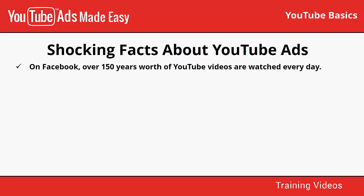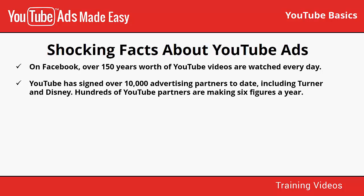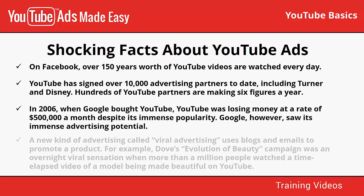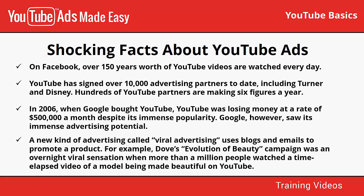The key to effective advertising seems to be the ability to actively engage the viewer, ideally somewhere between the 10 and 20 second mark. On Facebook, over 150 years' worth of YouTube videos are watched every day. YouTube has signed over 10,000 advertising partners to date, including Turner and Disney, and hundreds of YouTube partners are making six figures a year. When Google bought YouTube in 2006, YouTube was losing $500,000 a month, but Google saw its immense advertising potential. A new kind of advertising called viral advertising uses blogs and emails to promote a product.